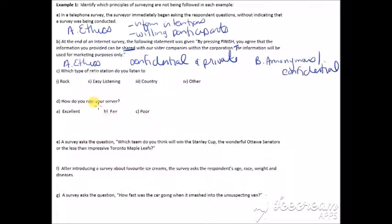Everything should be kept confidential and private. And then also be anonymous and confidential. They shouldn't be sharing your information. Which type of race of, oh, radio station. Do you listen to rock easily listening country or other? So there's a bias here. Because this question leads to one, two or three, right? Usually when you identify one that you like decently, you just choose it rather than other.